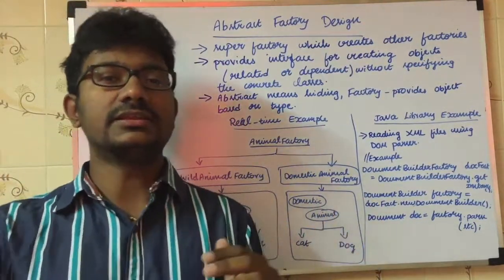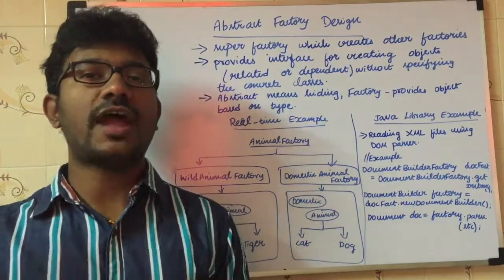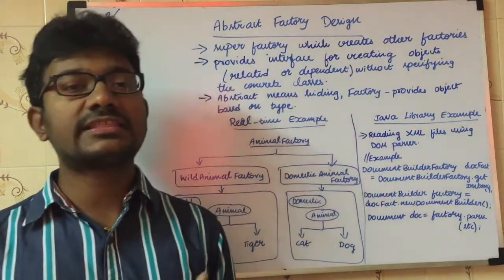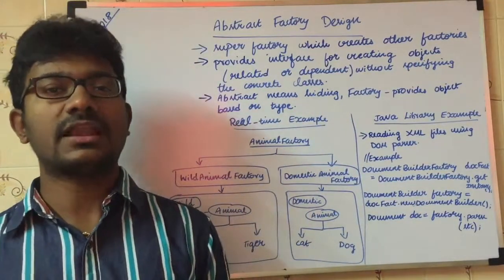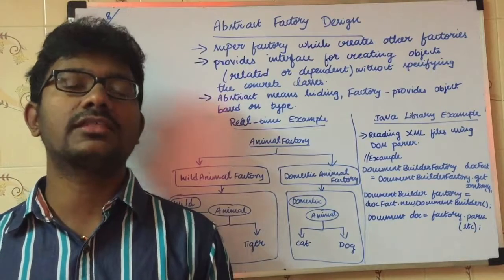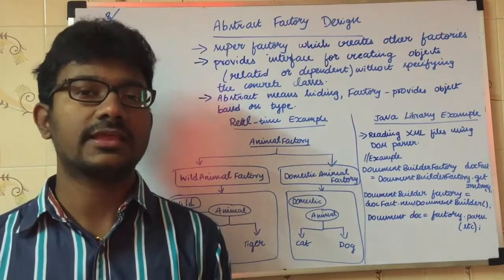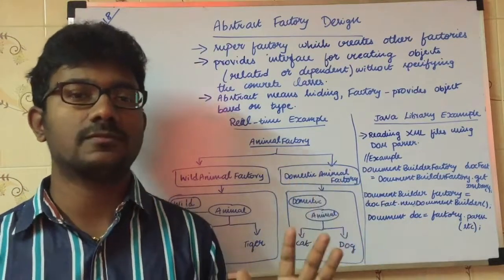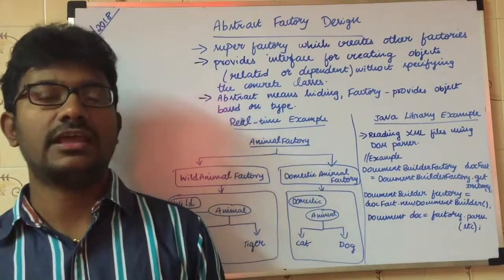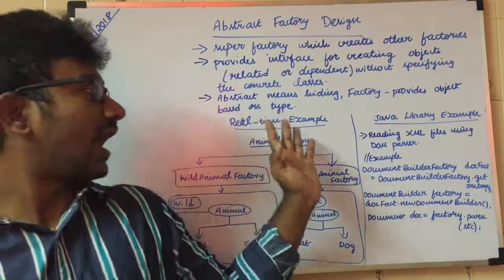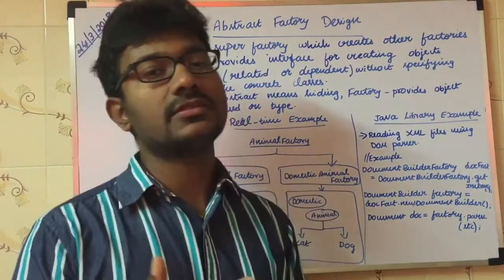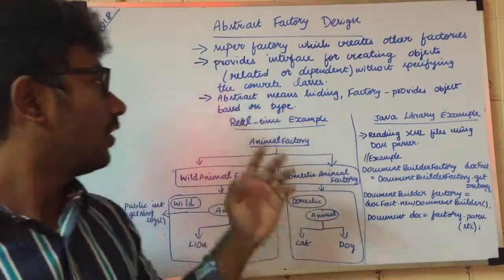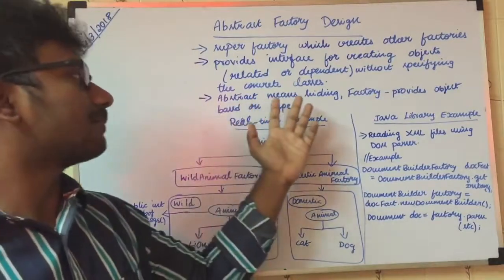Hiding means hiding the inner details. For example, when we switch on a fan, we know how the fan works — but we don't see the internal workings. That is abstraction. When we switch on the fan, we know it works, but the inner details are hidden. That is abstraction.